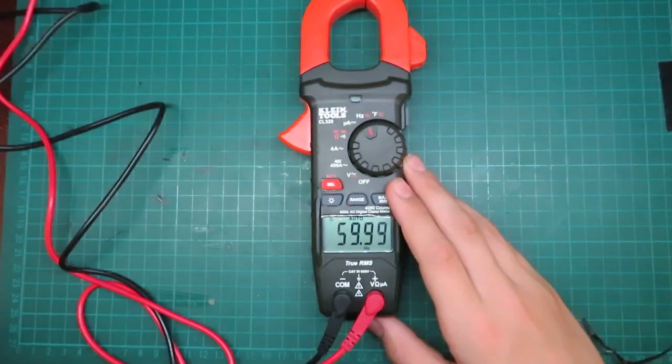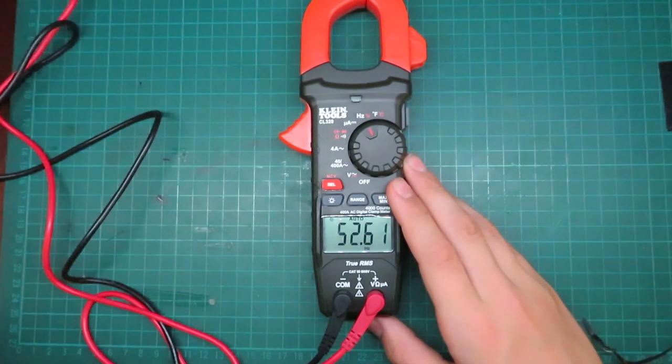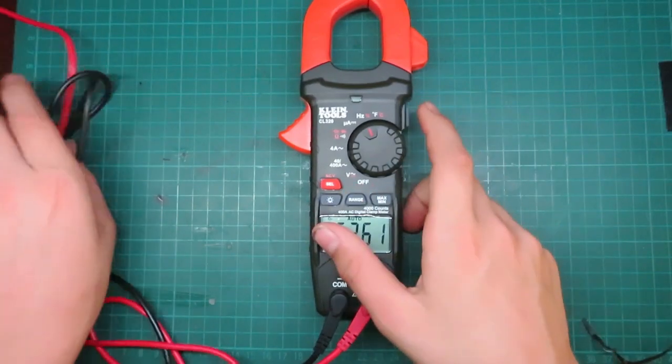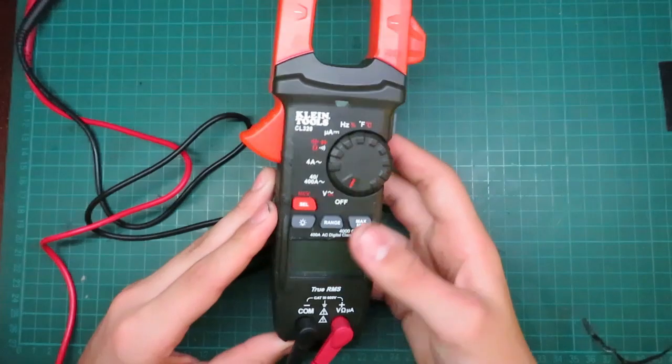So here we go, plug it in. There we go, 59.99. So very close to 60 hertz. That's what's supposed to be there. So that's one way. You can use some multimeters that will have a hertz function on it, like this one.